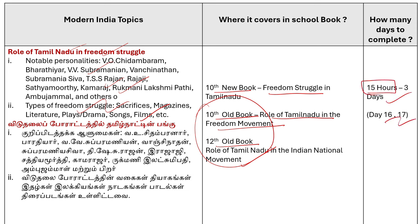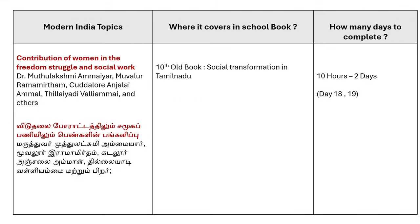What you are doing here is Group 2. Next is Modern India — Contribution of Women in the Freedom Struggle. This is very specific but also covers social transformation in Tamil Nadu.